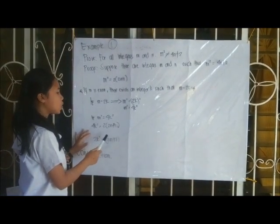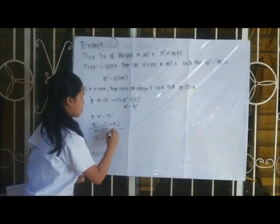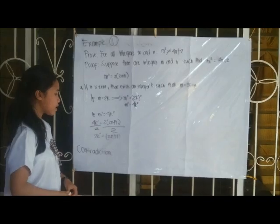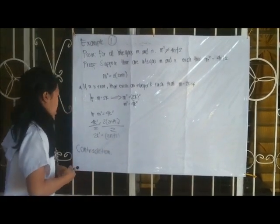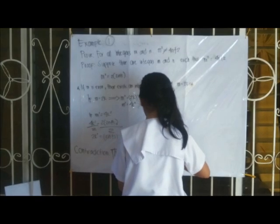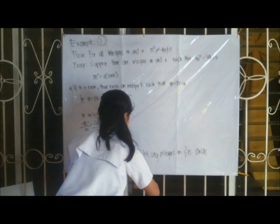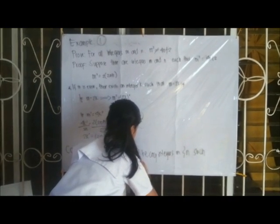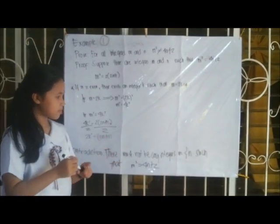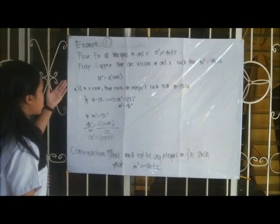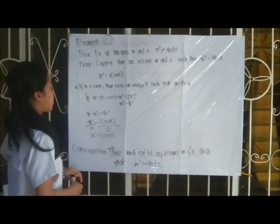So 4k squared equals 2 times (2n plus 1). Dividing by 2 gives 2k squared equals 2n plus 1. As you can see, 2k squared is even and 2n plus 1 is odd, so these cannot be equal. Our contradiction shows there must not be any integers m and n such that m squared equals 4n plus 2. So our previous assumption is wrong, and the original statement is true.